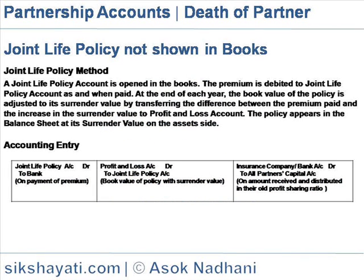Joint Life Policy — Method 1 (In Books Method): A Joint Life Policy account is opened in the books. The premium is debited to the Joint Life Policy account as and when paid. At the end of each year, the book value of the policy is adjusted to its surrender value by transferring the difference between the premium paid and the increase in the surrender value to the profit and loss account.